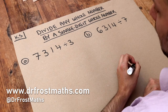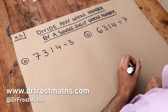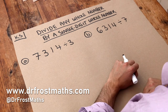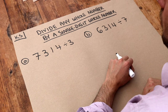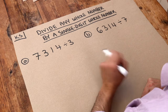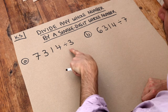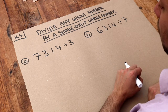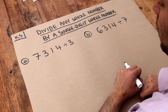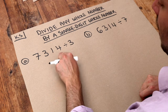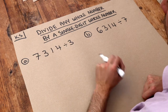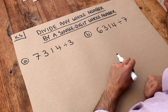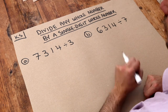Hello and welcome to this Dr Ross Maths key skill video on dividing any whole number by a single digit whole number. What it means to divide a number by another is you want to see how many times three goes into 7,314. For example, if we had 7,314 sweets and we wanted to share them between three people, doing this division will tell us how many sweets each of those three people get.